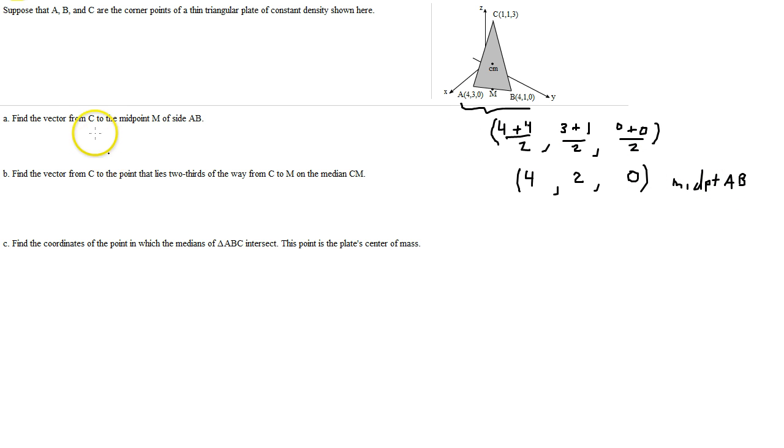Now we want the vector from C, coordinates 1, 1, 3, to M. What we do with that is we subtract. Let's call this M. This is the terminal of that vector. And this is the initial. So when we go to find a vector from one point to another, all we need to do is subtract the terminal components from the initial components.